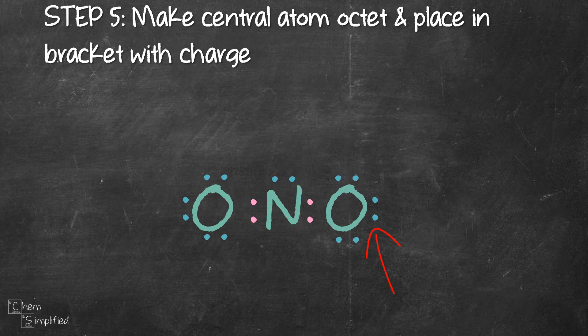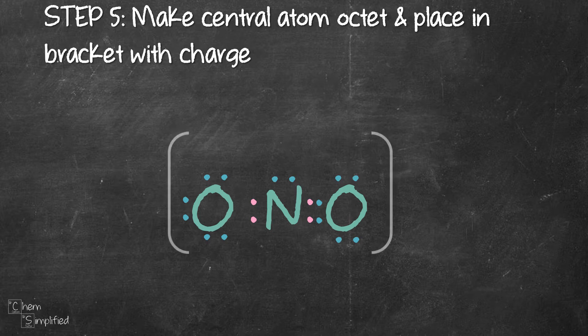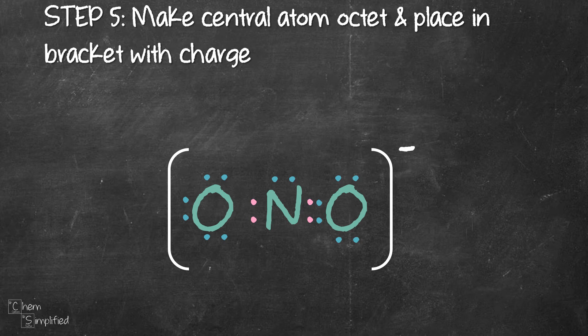The bonding pair from either one of the oxygen will do. So now everyone is happy, everyone is octet. Since this is a polyatomic ion, we need to place in the bracket and the charge over our Lewis structure.